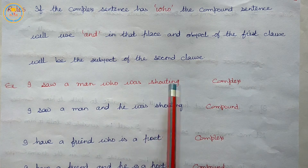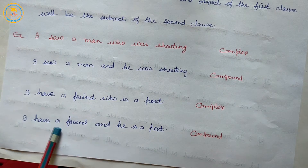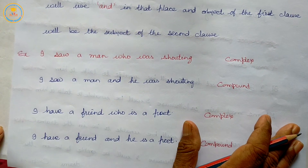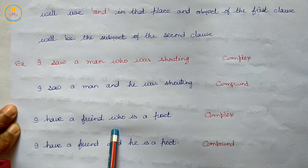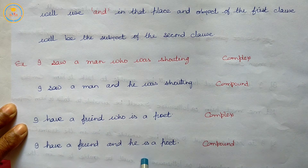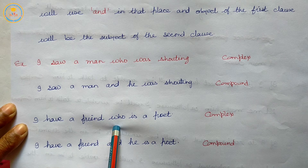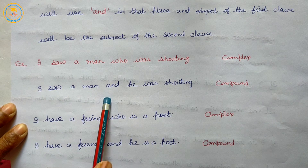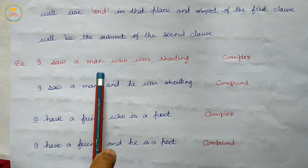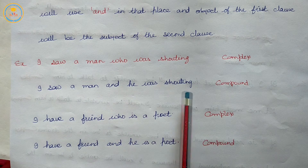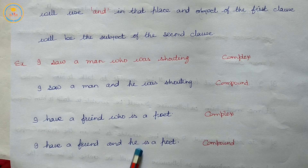Examples for rule five: 'I saw a man who was shouting' becomes 'I saw a man and he was shouting.' 'I have a friend who is a poet' becomes 'I have a friend and he is a poet.' We use 'and' in place of 'who' and the object of the first clause becomes the subject of the second.